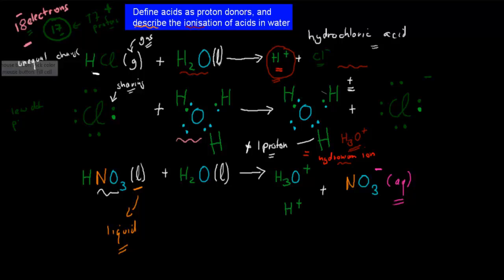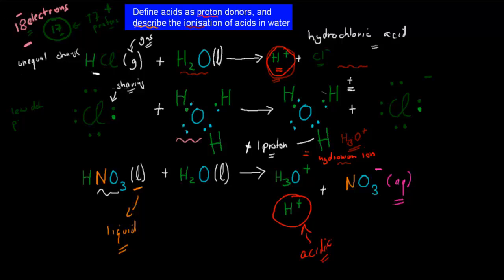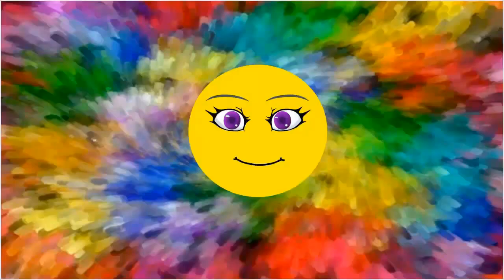Going over the dot point again: define acids as proton donors — we saw how these protons get donated in the form of that hydrogen ion. That's what causes something to be acidic: the extra hydrogen ion. And describe the ionization of acids in water — that was the whole point of when we have, for example, hydrogen chloride in its gas form, we put that into water, and then it dissociates into its ions: hydrogen ion and chloride ion. That was the ionization of acids in water. You should know that we're talking about proton donors when it comes to acids, and that hydrogen ion is that proton. I hope that was useful. Thank you for watching.